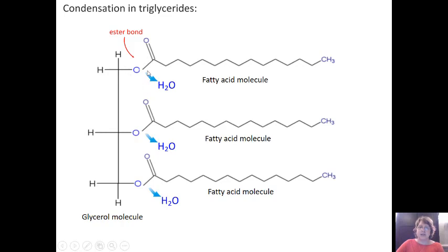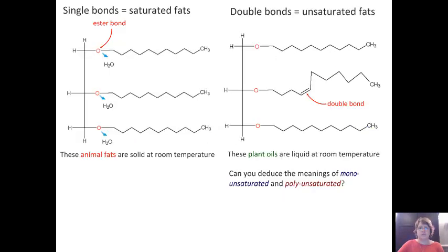Because we've made water in this process, this is called a condensation reaction. It's also how we join monomers together to form a macromolecule or a polymer. A triglyceride has three of those hydroxyl groups, so it can join with three fatty acid groups.